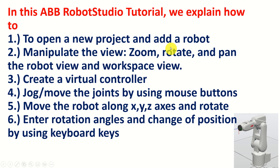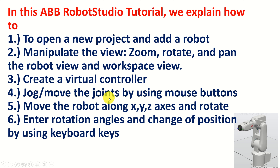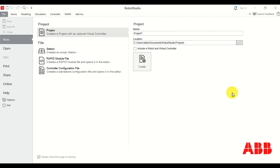Hello everyone and welcome to ABB Robot Studio tutorials. In this tutorial we explain how to open a new project and add the robot to that project. Then we explain how to manipulate the view — how to zoom, rotate and pan the robot view and the workspace view. Then we explain how to create and add a virtual controller, how to jog or move the joints using mouse buttons, how to move the robot along XYZ axis and how to rotate, and finally how to enter rotation angles and change joint positions using keyboard keys.